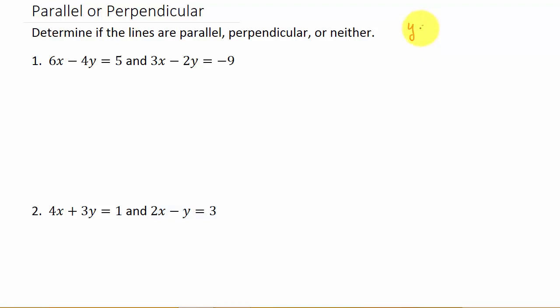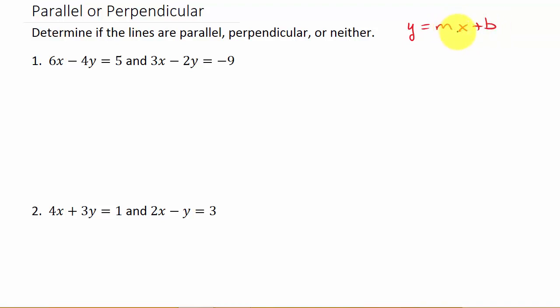Hopefully you remember y equals mx plus b — slope-intercept form. So if you take the equation of the line and solve it for y, we get a linear equation in this form, and the number in front of x is your slope. So let's look at this example.